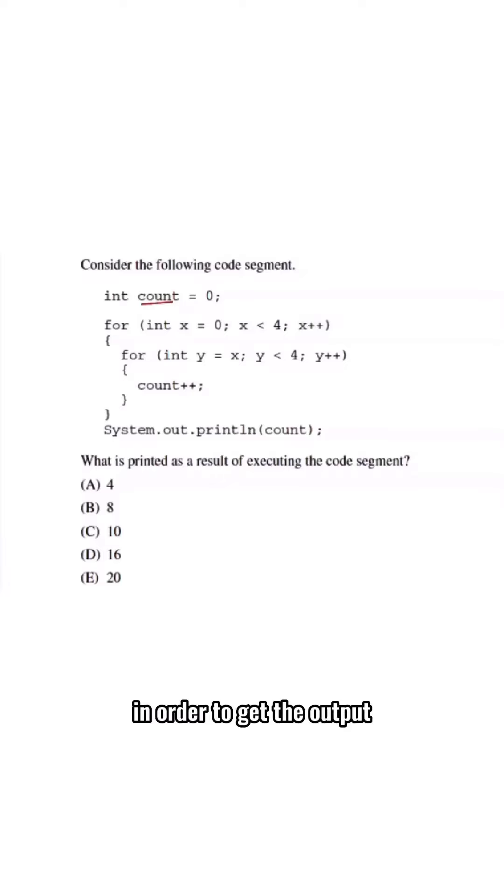In order to get the output, we must trace the execution of the code here. So let's make a table illustrating the values here. First, we want to consider x. Next, we want to consider y. And then we want to consider count.